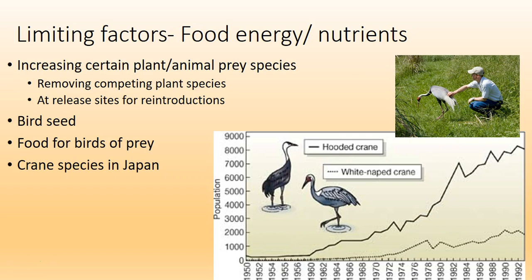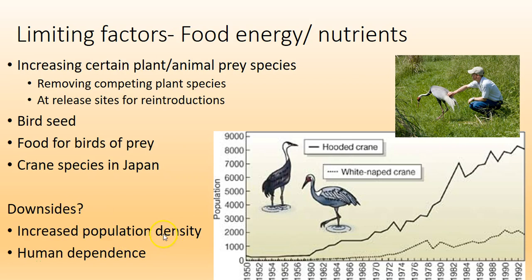Could there be any downsides to adding food? There are. First, you have an increased population density — if you have 8,000–9,000 cranes in a small area, you'll have huge density where they're all closely packed. They can devastate the area around them, and just like with the flu spreading in crowded people, increased population density means they're more likely to get sick and spread it to others. The other downside is human dependence, where they might not be able to forage properly on their own anymore.